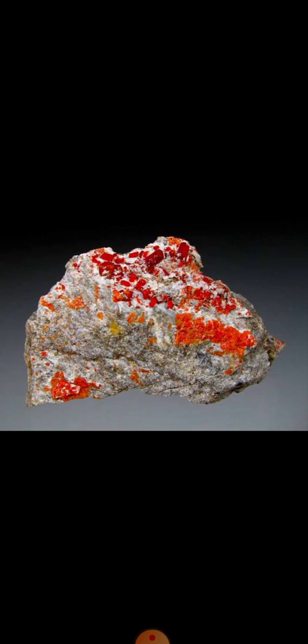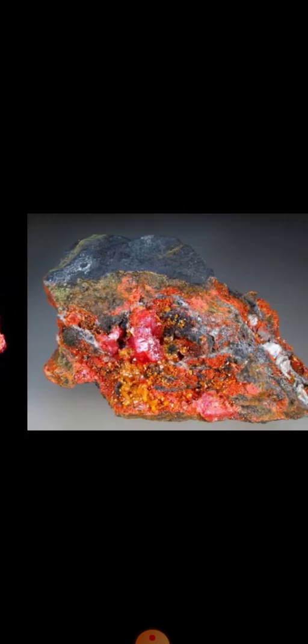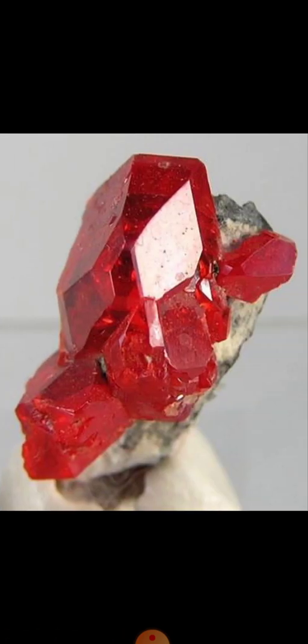Realgar is extracted in China, Peru, and the Philippines. It is also extracted in Hungary, Manhattan, Nevada, and in the geyser deposits of Yellowstone National Park. Here you can see crystals of realgar — in this specimen the groundmass is calcite, and the red color is realgar.